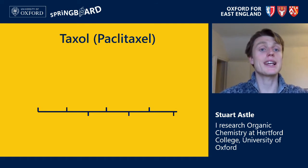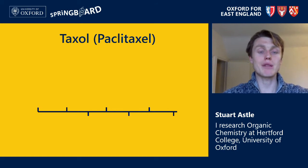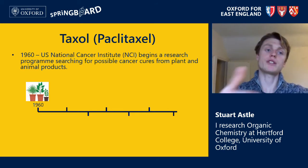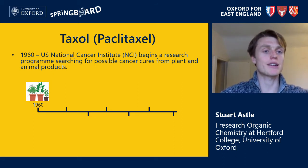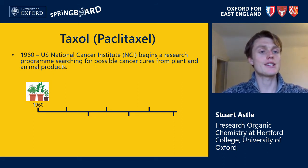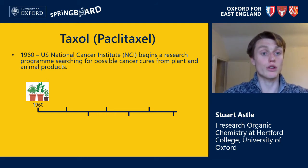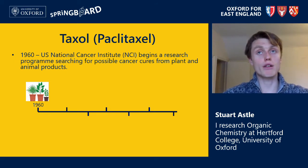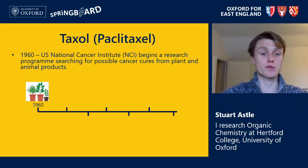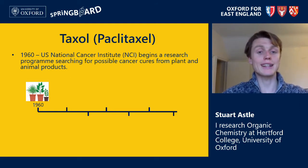The second drug I want to talk about — which you may be less familiar with — is a drug called Taxol, which also goes by the name Paclitaxel. It's a chemotherapy drug used to treat breast cancer and other types of cancer. We don't need to go back to the ancient Egyptians this time — just back to the 1960s. In 1960, the US National Cancer Institute began a research program searching for possible cancer cures from plant and animal products, as cancer cases had been on the rise throughout the 1900s.